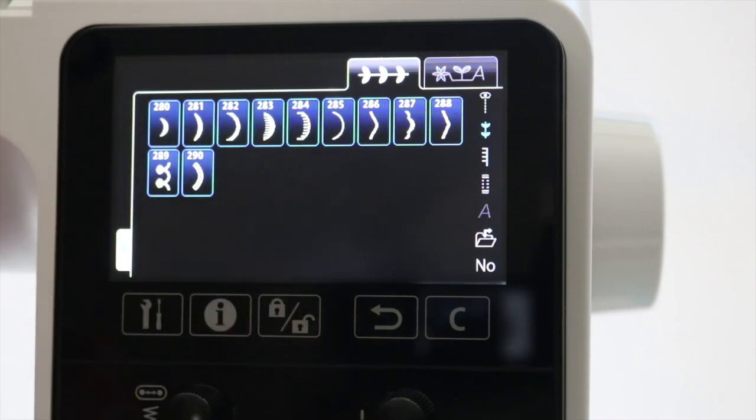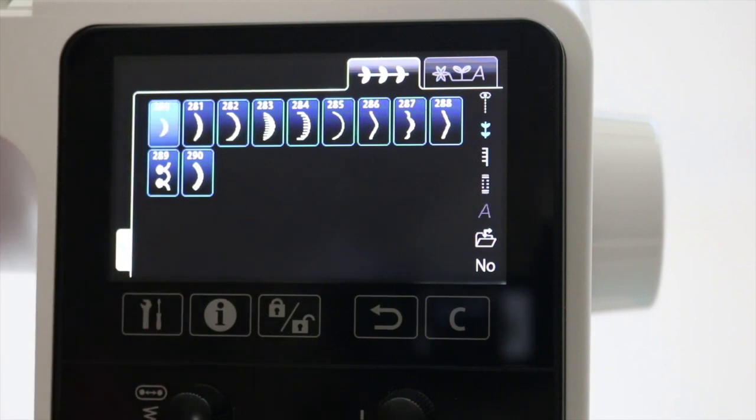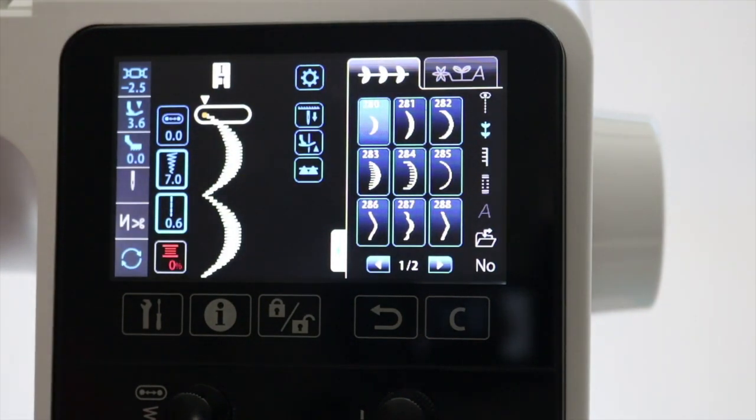I'm going to choose the stitch I want to work with and that's going to be stitch number 280, a scallop stitch. I'm going to close that window so I can get to my settings menu to find the elongation feature.